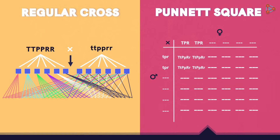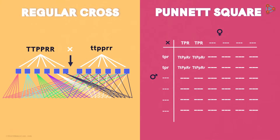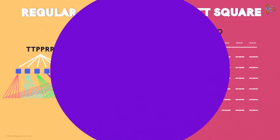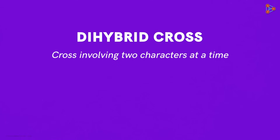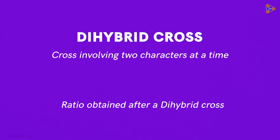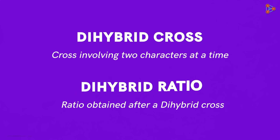Talking about crosses involving more than one character — what are the crosses involving two characters called? The cross involving two characters at a time is called a DIHYBRID CROSS, and the ratio obtained will be a DIHYBRID RATIO. Let's understand this interesting concept in the next part.